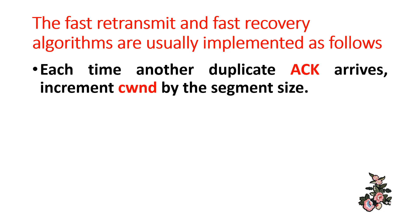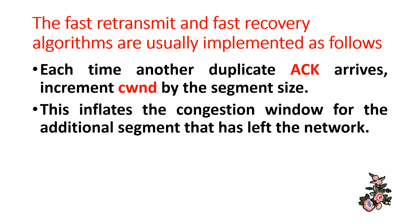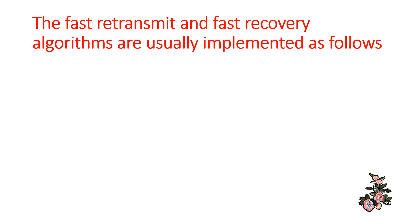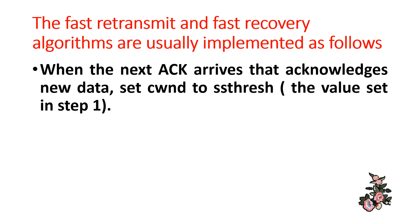For each additional duplicate ACK received, increment the congestion window by the segment size. This inflates the congestion window for the additional segment that has left the network. If allowed by the new congestion window value, transmit a packet. When the next ACK arrives acknowledging new data, set the congestion window to ssthresh — the value set in step one.